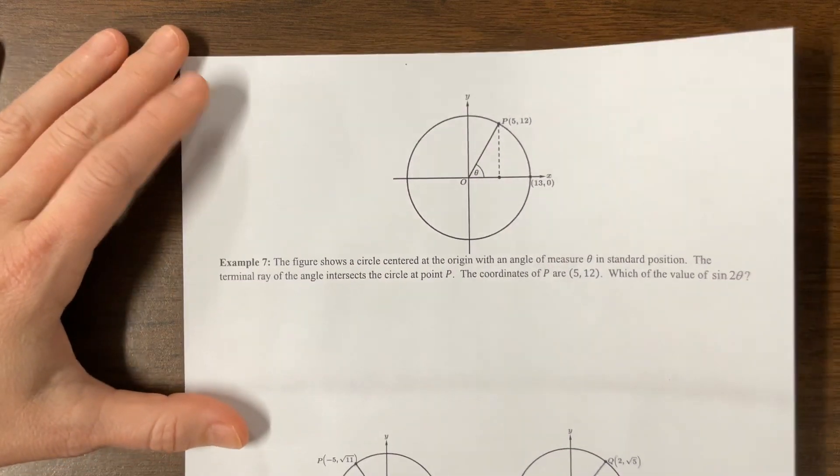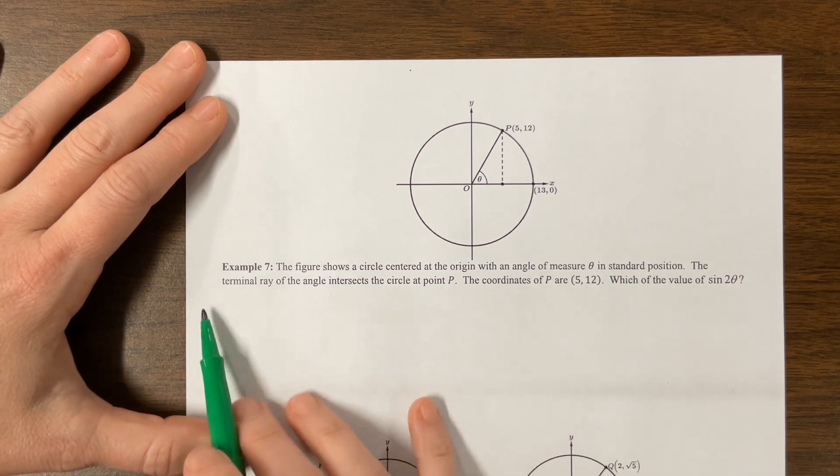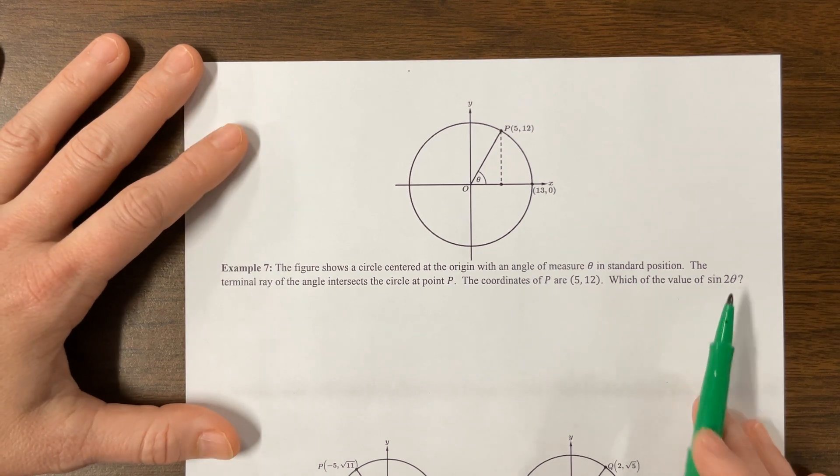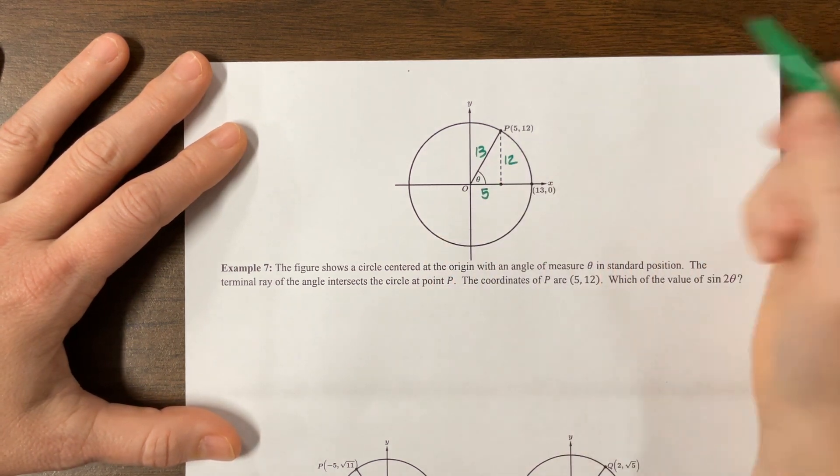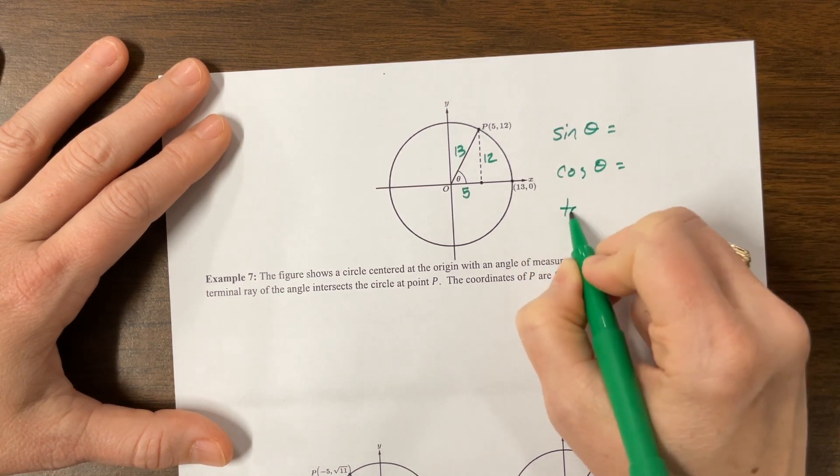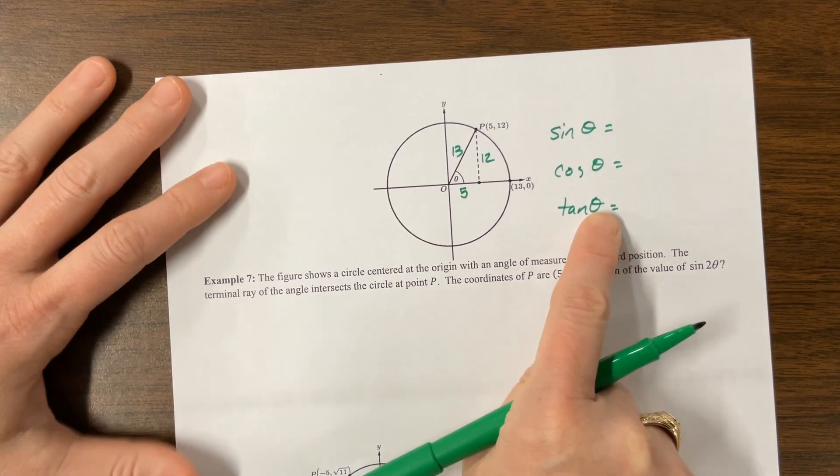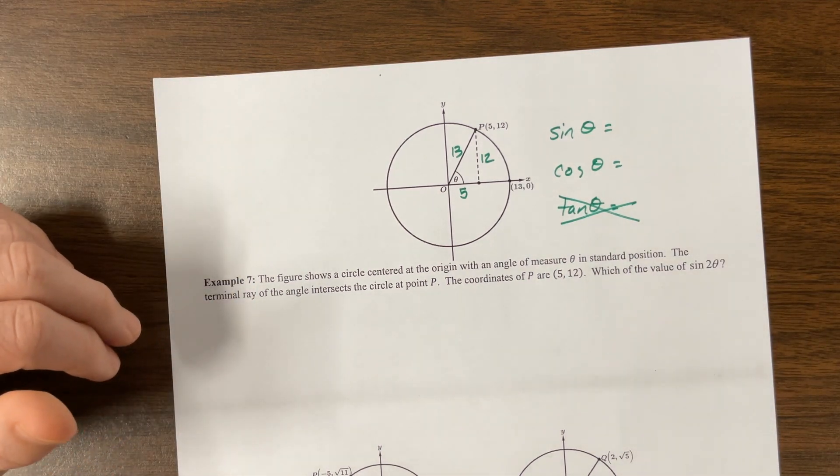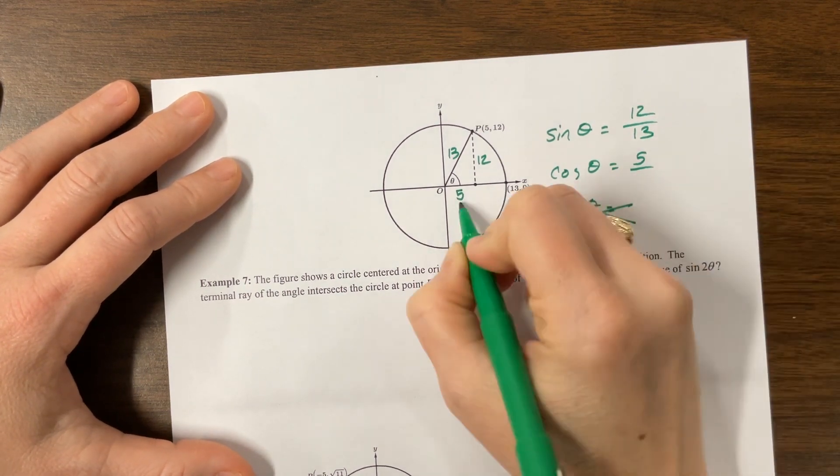Okay. The figure shows an angle centered at the origin with angle measure theta in standard position. The terminal ray of the angle intersects at point P. The coordinates of P are this. What is the value of sine? Oh, nice. Okay. So what I like to do here, this is 5, this is 12, this is 13. What I would always do is have my kids write out, okay, sine of theta equals, cosine theta equals, and I used to also make them tell me tangent of theta equals, because the tangent formulas were something I used to teach, the tangent double angles, but now they're not. And so anyway, you can write it or not, whatever. But sine of this theta is opposite over hypotenuse. Cosine is adjacent over hypotenuse.